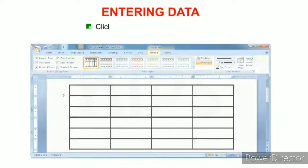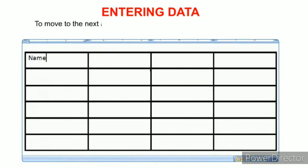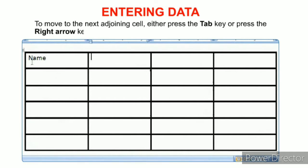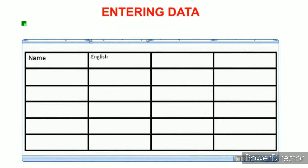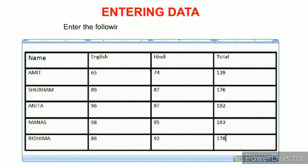To enter data in a table, click in a table cell and type the text. To move to the next adjoining cell, either press the Tab key or the right arrow key. To go to the previous cell, press Shift+Tab or the left arrow key. Enter the following data in the table as shown in the figure.